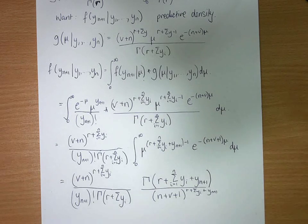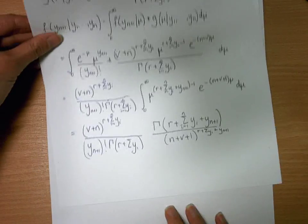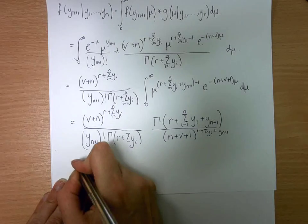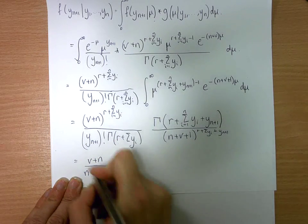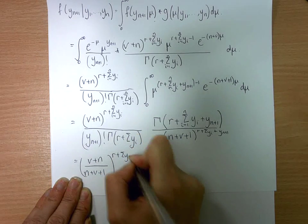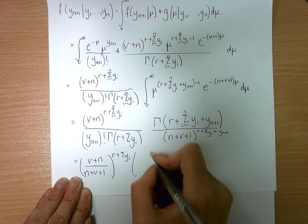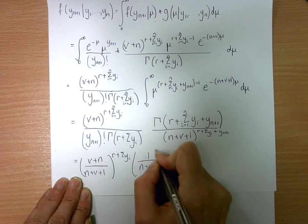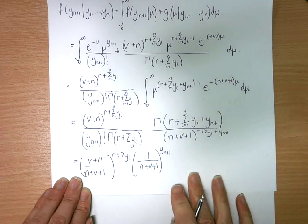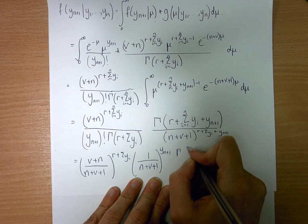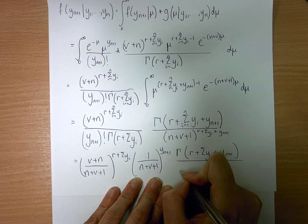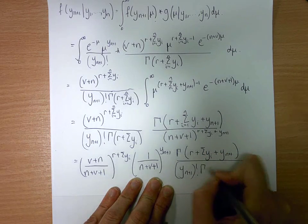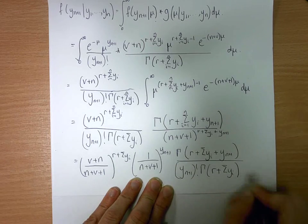Now, by grouping this cleverly, and if we constrain r to be an integer for simplicity, we group as follows: v plus n over n plus v plus 1, to the power of r plus the sum of y_i; then one more factor of 1 over n plus v plus 1 to the power of y_{n+1}; and then the gamma function of r plus the sum of y_i plus y_{n+1}, over y_{n+1} factorial times the gamma function of r plus the sum of y_i.